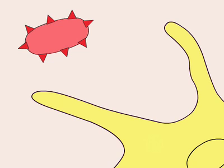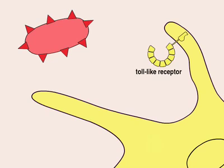Dendritic cells have the ability to recognize PAMPs through the expression of a family of toll-like receptors, or TLRs.